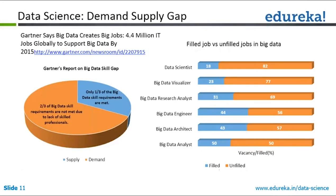There are many job roles within the data science field: the data scientist who runs machine learning algorithms, the visualizer who produces graphics from data, the research analyst who derives insights from results, the engineer who converts raw data into processed data, and architects who design the overall solution.